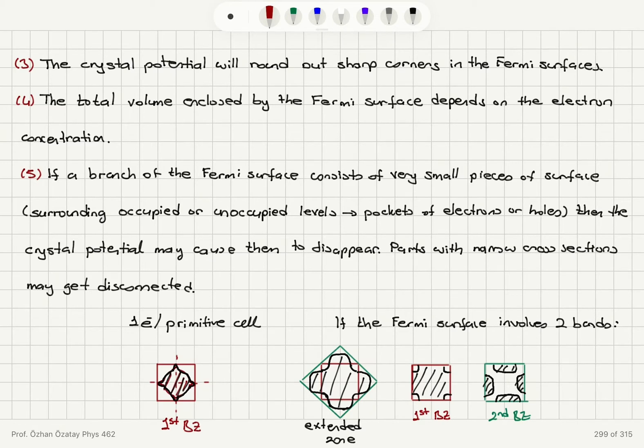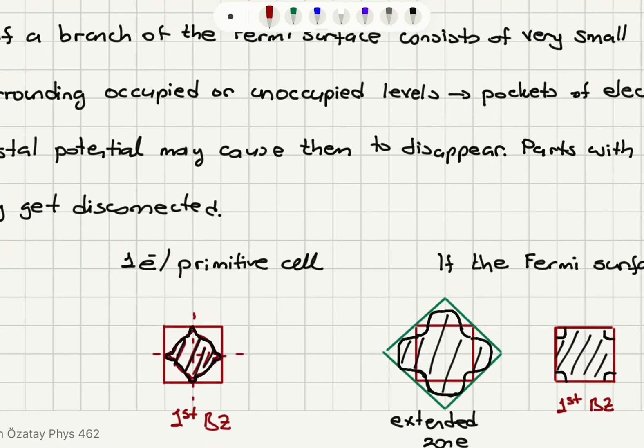So let's look at the one electron per primitive cell scenario. If you remember we have the Fermi sphere in the first Brillouin zone in this case, so half of the volume is basically occupied by the Fermi sphere. In the nearly free electron case, we're going to have a modification here. So this will protrude out to the Brillouin zone boundaries and it will intersect the Brillouin zone boundaries perpendicularly.